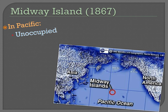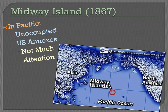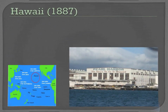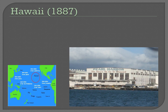Next, the Midway Islands — located in the Pacific, also in 1867. There was really nobody there; it was an unoccupied island. America basically takes over, and nobody really notices because there's not much there. Technically it wasn't our property, but when we take it over, this is expanding our power.